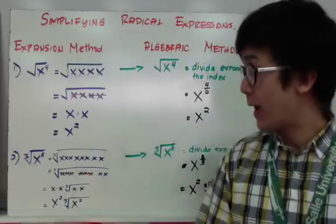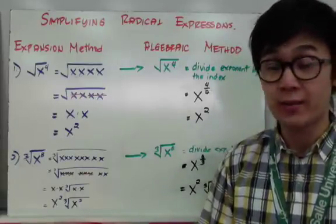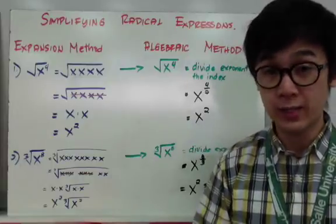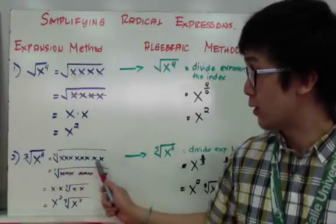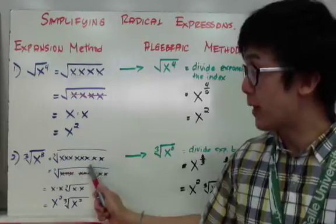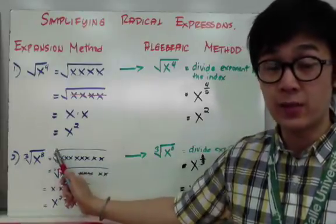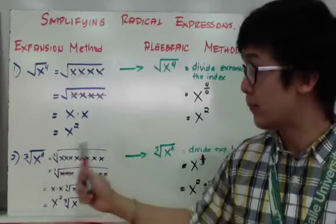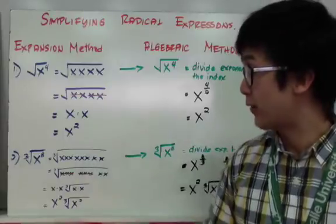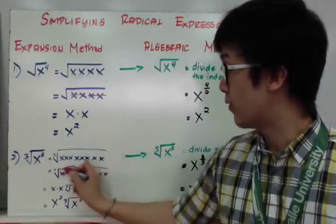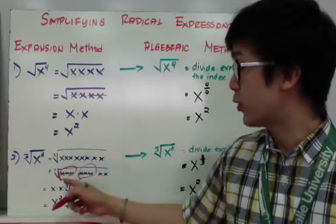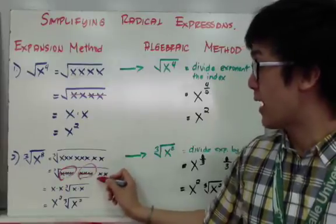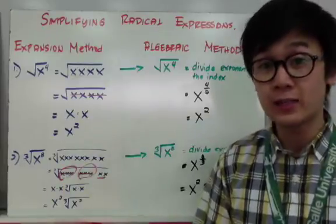In example two, I have cubed root of x to the eighth. I expand the eight x's inside the radical and group them into sets of 3, since the index is 3. The index dictates how many you need per group. I get two complete groups of 3 that come out, with two x's left over inside the radical.